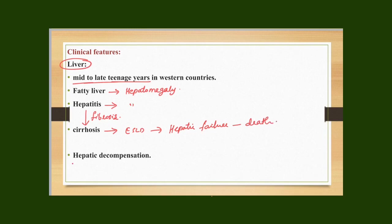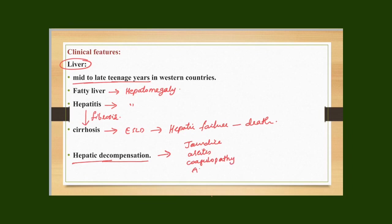Some patients, after acute or chronic hepatitis, can present with features of hepatic decompensation — that is, jaundice, ascites, coagulopathy with prolonged PT, and encephalopathy. These patients require immediate treatment; otherwise they may die.